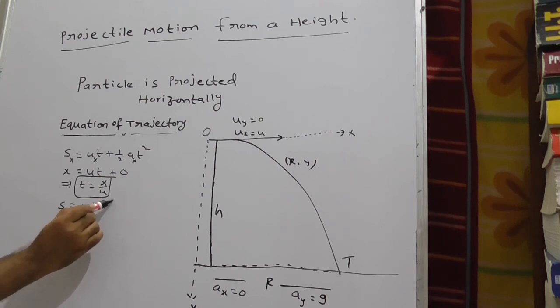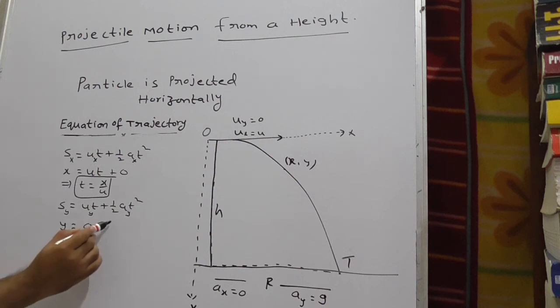Next, take s is equal to again ut plus half at squared. Now find s, that is distance of the particle with respect to y. So y apply y here. sy gives y, distance of the particle with respect to y axis. That is y. Uy is 0, 0 into something 0 plus half ay is nothing but g, t squared.